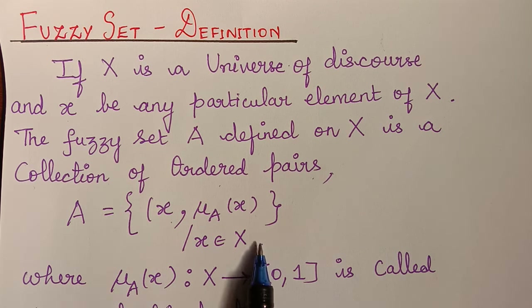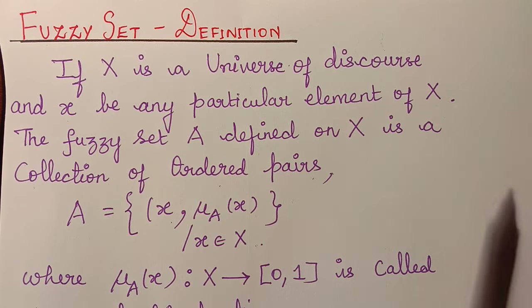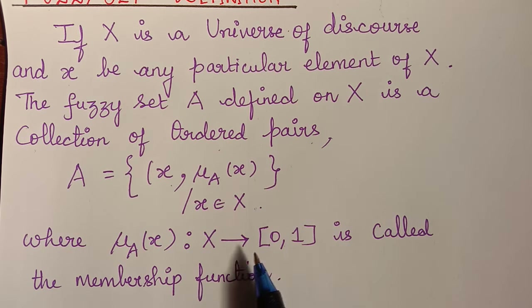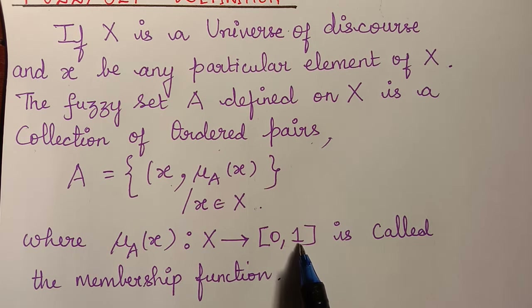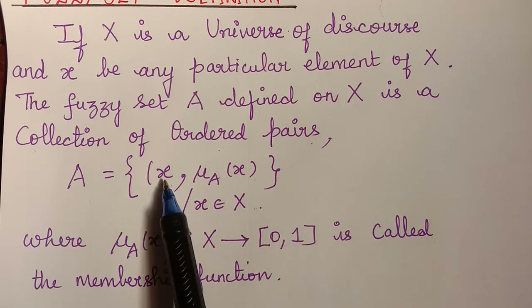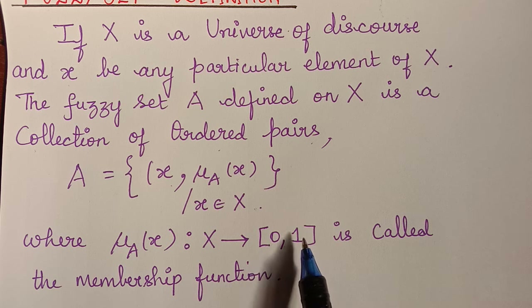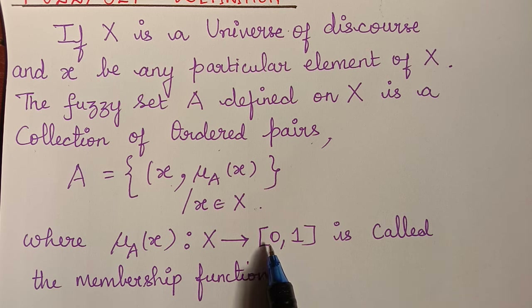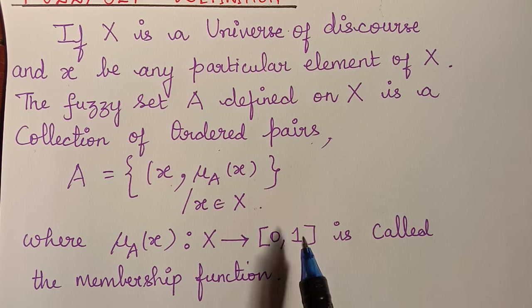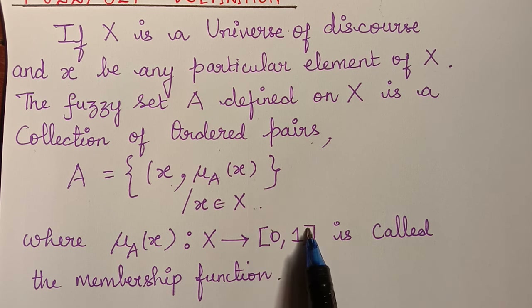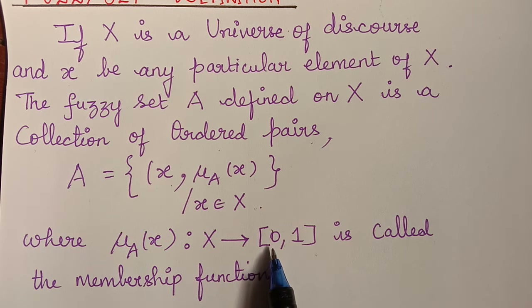This membership value takes values in the closed interval [0, 1]. It is a mapping of the elements to the closed interval [0, 1], considering all the infinite points between 0 and 1. We include 0 as well as 1, where 0 represents no membership and 1 represents full membership.